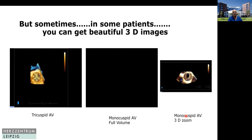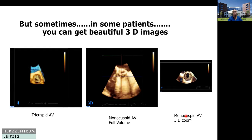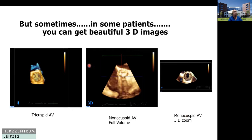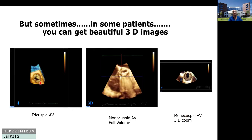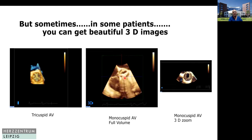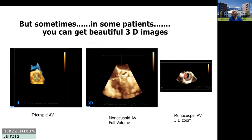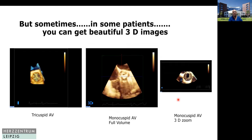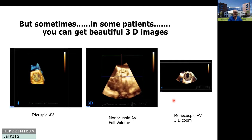But sometimes, in some patients, you can get beautiful 3D images. For example, a 3D tricuspid aortic valve here — this is an image of a monocuspid aortic valve in the full volume, and here it's a still frame in the zoom. So you can get beautiful images sometimes.